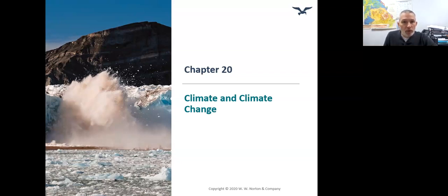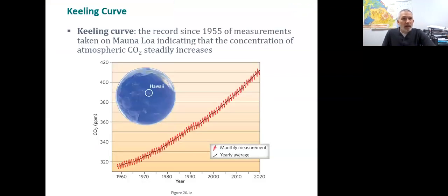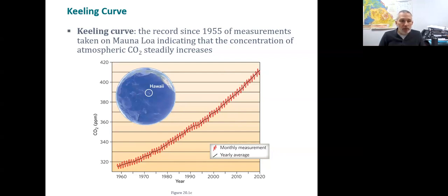The first thing we need to talk about in this chapter is climate. One of the classic examples we'll look at is carbon dioxide in the atmosphere. The first person to really consistently record carbon dioxide in the atmosphere was Charles Keeling. He set up a measurement station measuring atmospheric carbon dioxide in the middle of the Pacific Ocean in Hawaii.